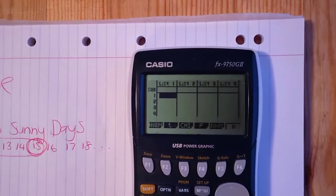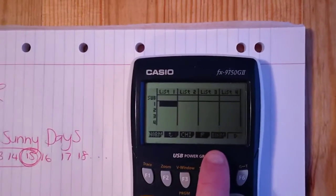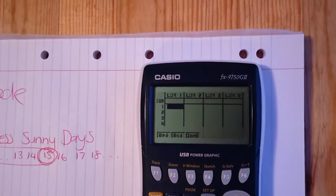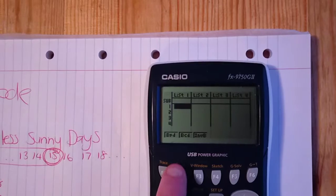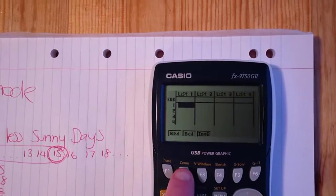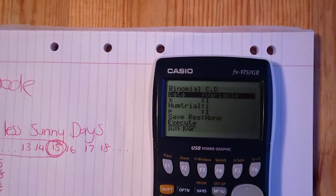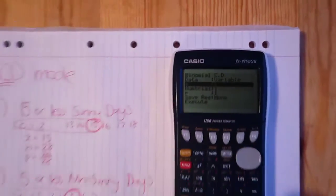And we'll see binomial just over there. So that's binomial distribution. And we're now using the BCD mode. And then from there, you'll have x, number of trials, and the probability in order to input.